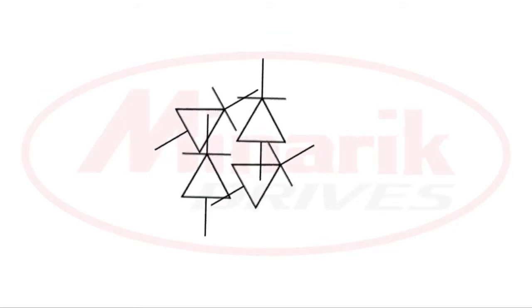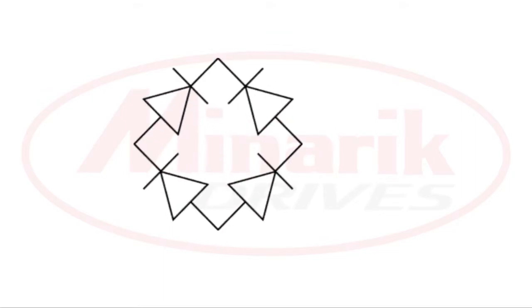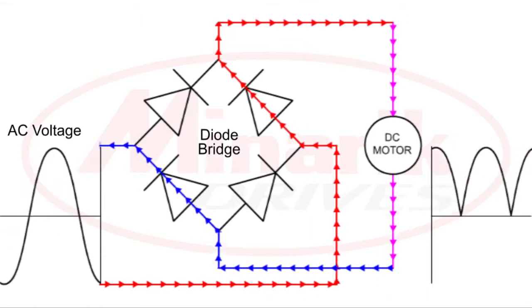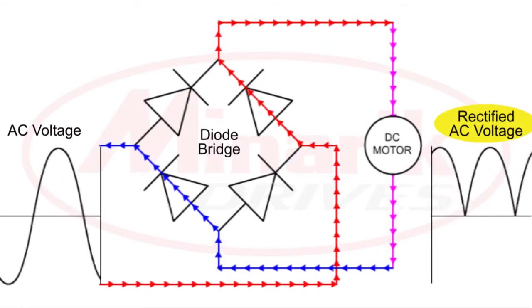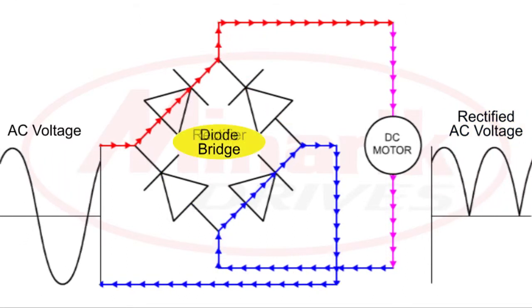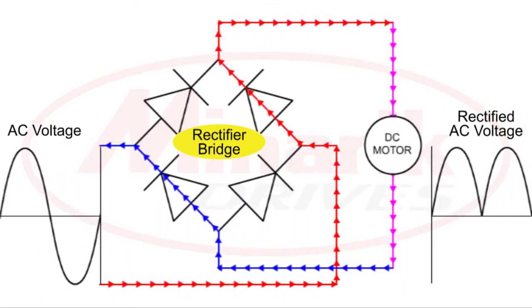Now imagine if you connected four diodes like so. This is called the diode bridge. A diode bridge converts the negative parts of the AC voltage to positive. This type of output is called rectified AC, and that's why a diode bridge can also be referred to as a rectifier bridge.